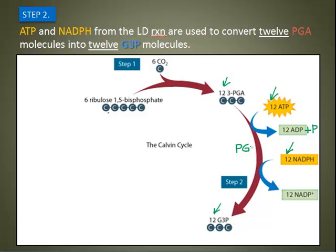That intermediate would be right in here on the diagram. Some books show this and some books do not. It's PGAL that takes the high-energy electrons carried by NADPH and uses them to convert into molecules of glyceraldehyde 3-phosphate, or G3P. In this step, ADP and NADP+ are formed, and they can be used again in the light-dependent reactions to produce new ATP and NADPH.